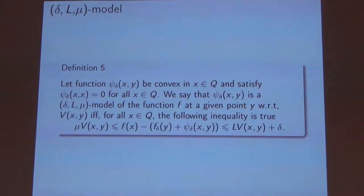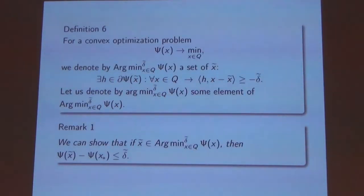Here comes the definition of the Delta-L mu model. The idea is similar to the definition of Delta-L model but we also have a lower bound here. If you remember the illustration on the first slide, here we also bound function from the bottom which allows us to have faster convergence rates. Moreover, we will have an exact solution of the auxiliary problem. It's kind of similar to what Alexander Gassnikov said in his talk.